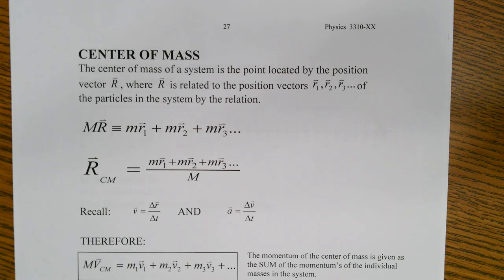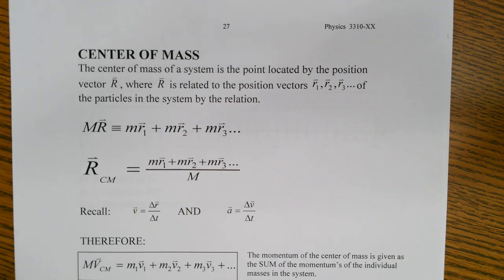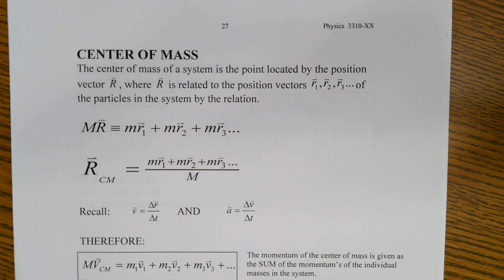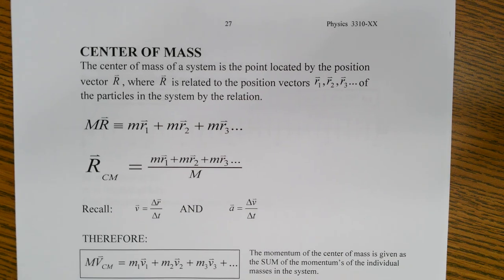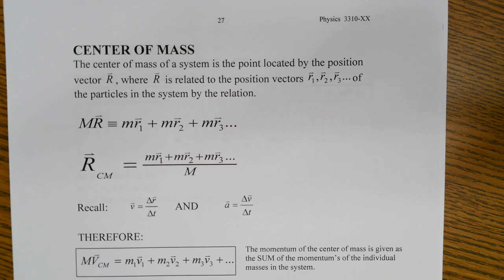Today we're going to be talking about center of mass. The center of mass of the system is the point located by the position vector r, where r is related to the position vectors r1, r2, r3, etc., of the particles in the system by certain relations.